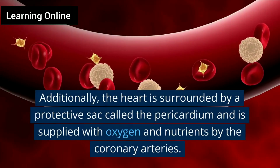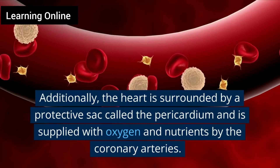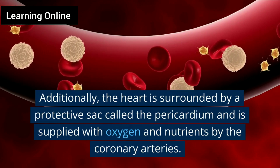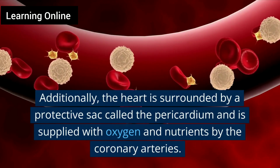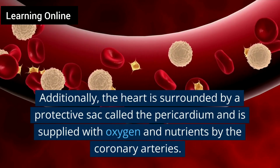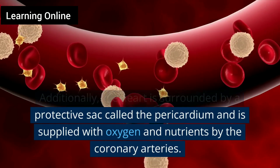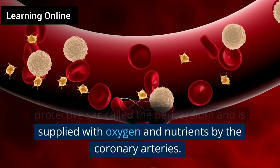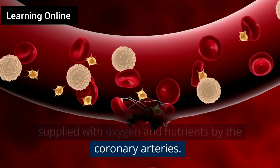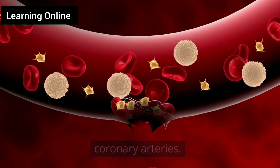Additionally, the heart is surrounded by a protective sac called the pericardium and is supplied with oxygen and nutrients by the coronary arteries.